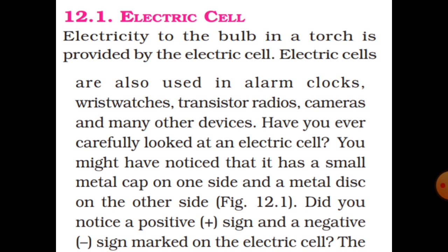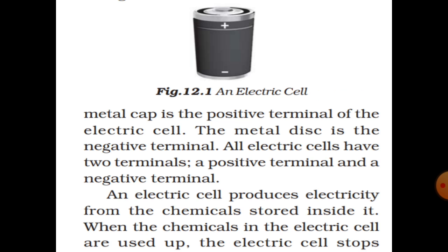An electric cell has a small metal cap on one side and a metal disc on the other side. The metal cap is the positive terminal of the electric cell. The metal disc is the negative terminal. All electric cells have two terminals: a positive terminal and a negative terminal.